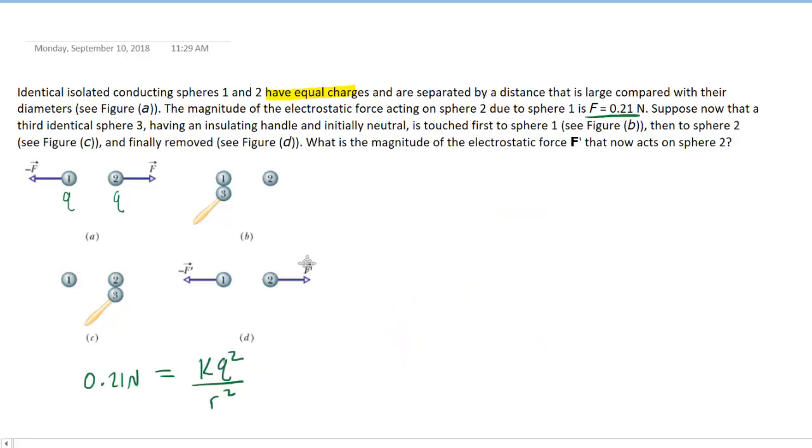Now, in figure B, we can see that spheres one and three are touching. We've already noted that sphere one carries a charge of Q, and as for sphere three, it says that it is initially neutral, so that means that its charge would be 0, of course.